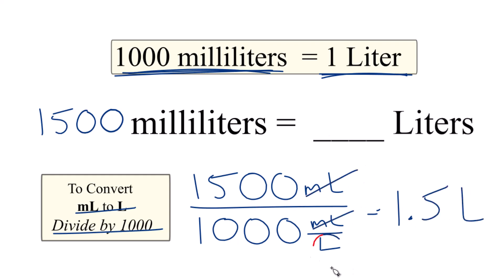So to convert from 1500 milliliters to liters, we're going to divide by 1000, and we end up with 1.5 liters. It's Dr. B.